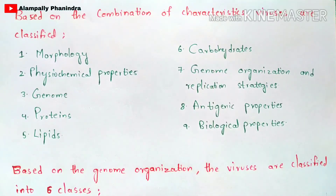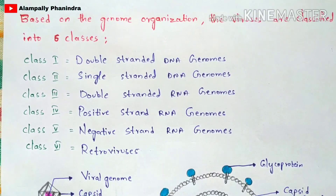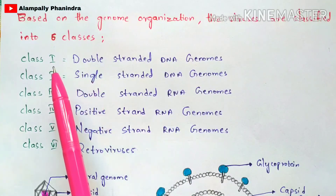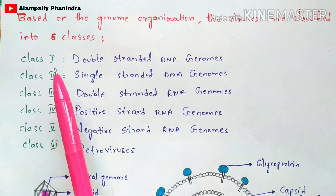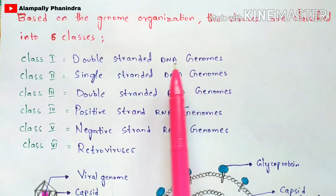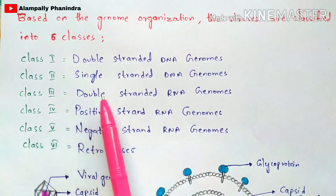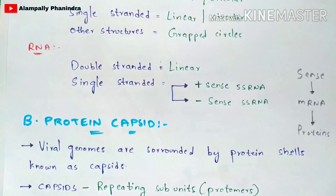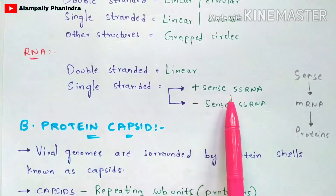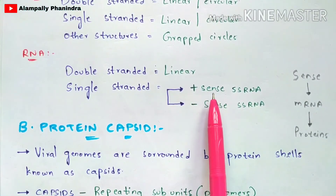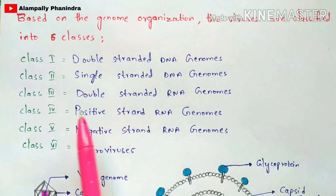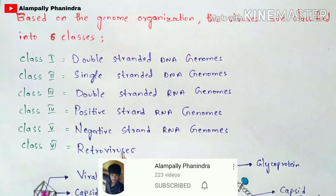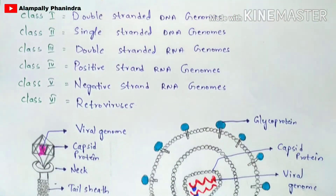Based on genome organization, viruses are classified into six classes: Class 1 — double-stranded DNA genomes; Class 2 — single-stranded DNA genomes; Class 3 — double-stranded RNA genomes; Class 4 — positive-strand RNA genomes; Class 5 — negative-strand RNA genomes; and Class 6 — retroviruses.